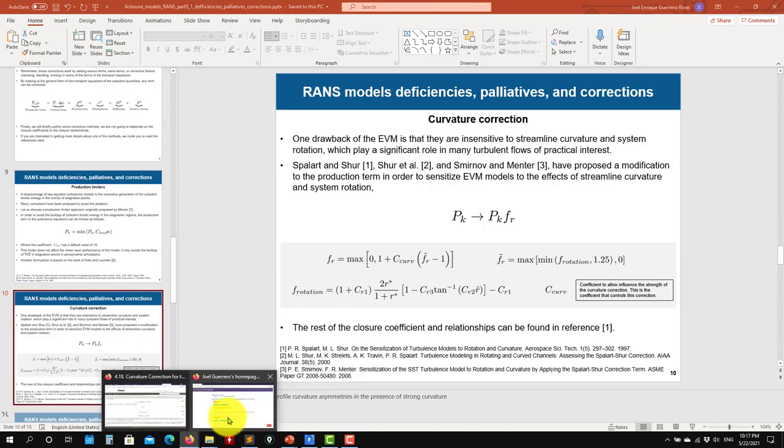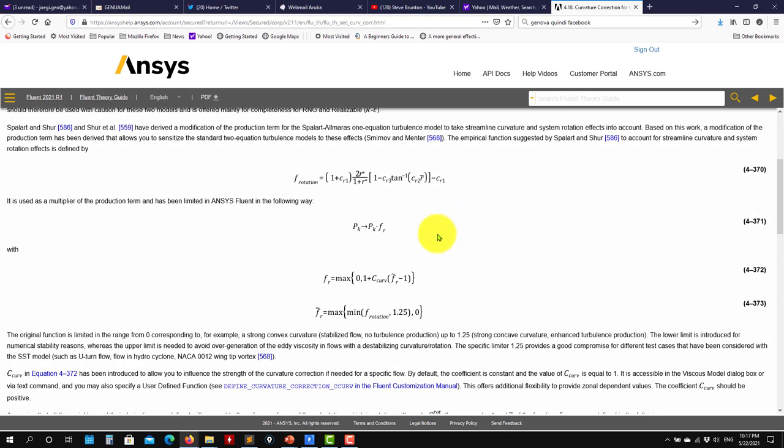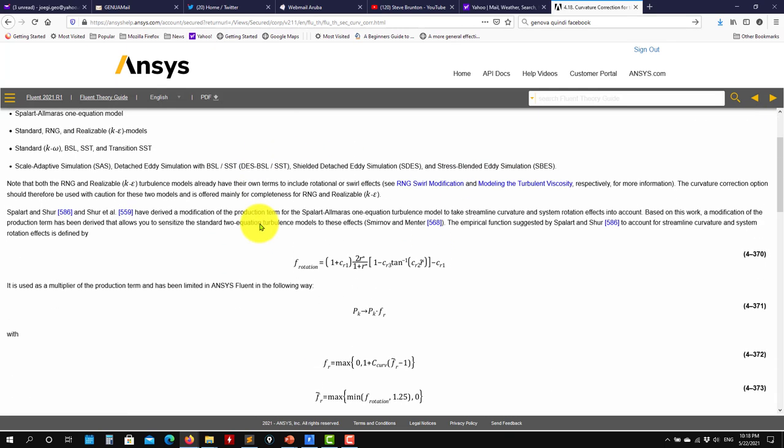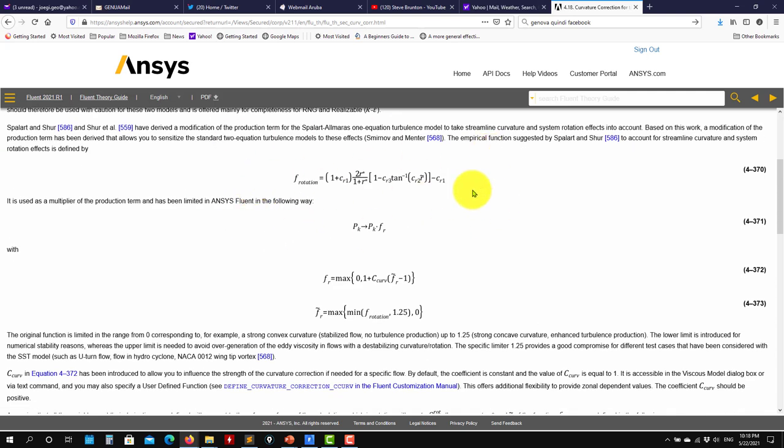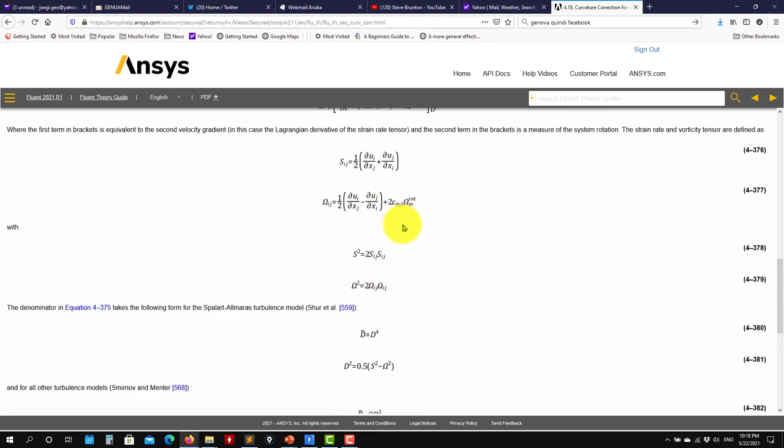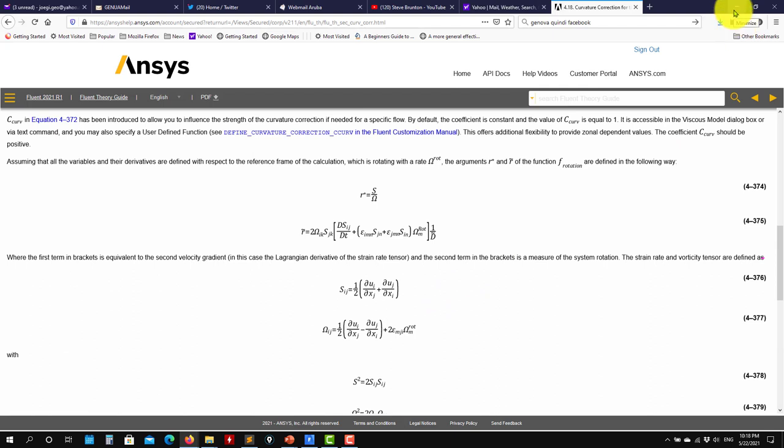So I always advise you to read the documentation. So here I open it. Fluent documentation. See here that probably you have a little bit longer explanation, but it's this curvature correction. Basically see that here you have these two quantities and see that they depend on strain rate and the spin tensor. According to that, it will do some correction like something similar in the production limiter.